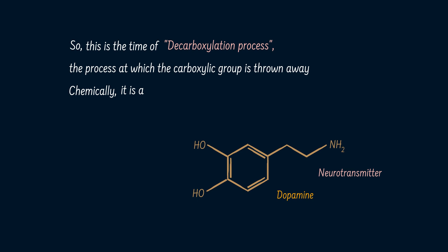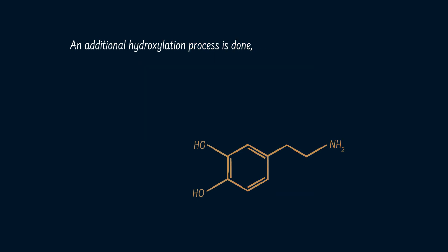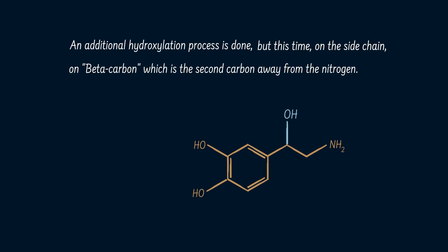Chemically, dopamine is a phenylethylamine derivative. An additional hydroxylation process is done, but this time on the side chain, on the beta-carbon, which is the second carbon away from the nitrogen. This converts dopamine to noradrenaline, which is also a neurotransmitter.